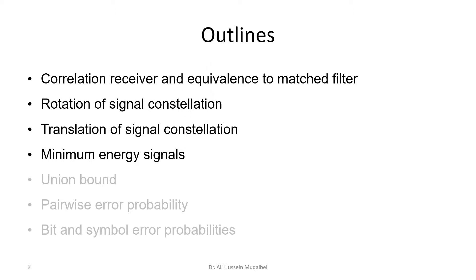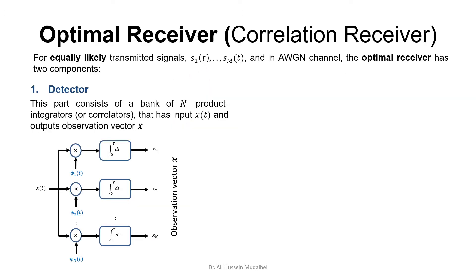What is the optimum receiver? The optimum receiver under the following assumptions — equally likely estimated signals s1 up to sM produced at the same probability — and assuming the channel is additive white Gaussian noise, the optimum receiver will have two components. One is the detector, which converts the waveform into an observation vector. This part consists of a bank of N product integrators or correlators — that's a product and that's the integration or correlation process.